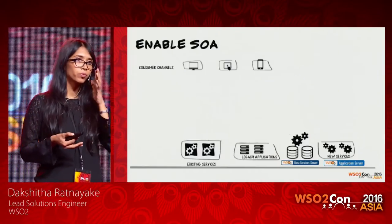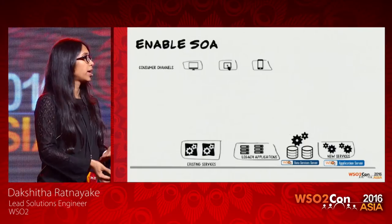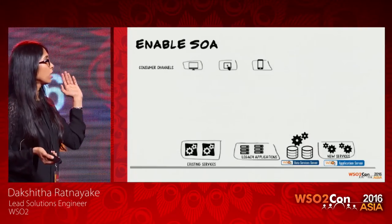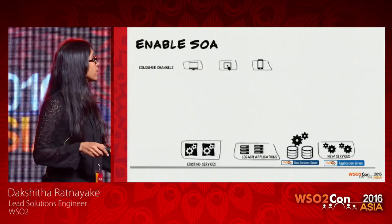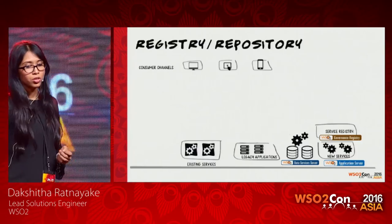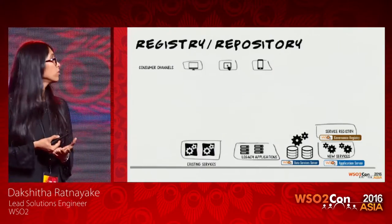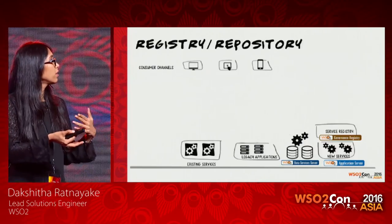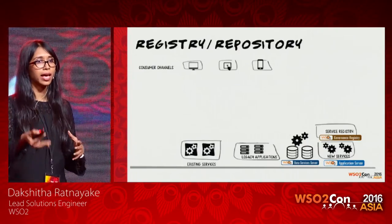One reason to use a data services layer: if you later want to change the database — say, moving from MySQL to a NoSQL database like Cassandra — your interface remains the same while your data technology changes. Once you have a clean services layer for data and core business, you need to think about governing these services. You can't just create services and forget them; you need governance to eliminate service duplication and proliferation and to let people know what services are available. For this, you can use the governance registry.